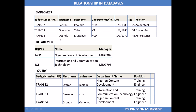We also have department ID in the department table. In a relational database management system, two tables are related using keys. What are keys? A key is a unique identifier that identifies a record. We have a primary key and also a foreign key. A primary key is a key in a table that uniquely identifies the record. In the employees table we have the badge number as our primary key, and in the departments table we have the ID as the primary key.